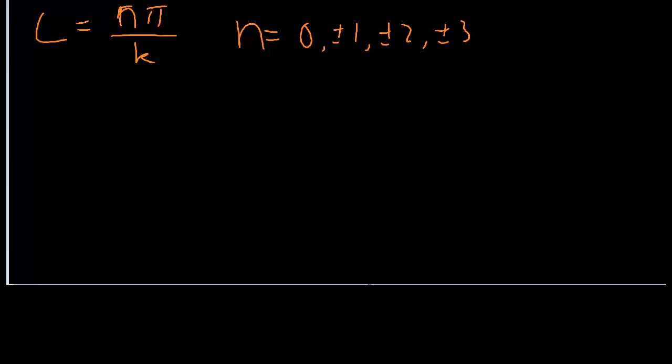So in general, for us to satisfy that sin(kL) equals zero, we have a general solution: kL = nπ, where n = 0, ±1, ±2, ±3. And of course, it has to be integer; it could be plus or minus, that's perfectly fine.